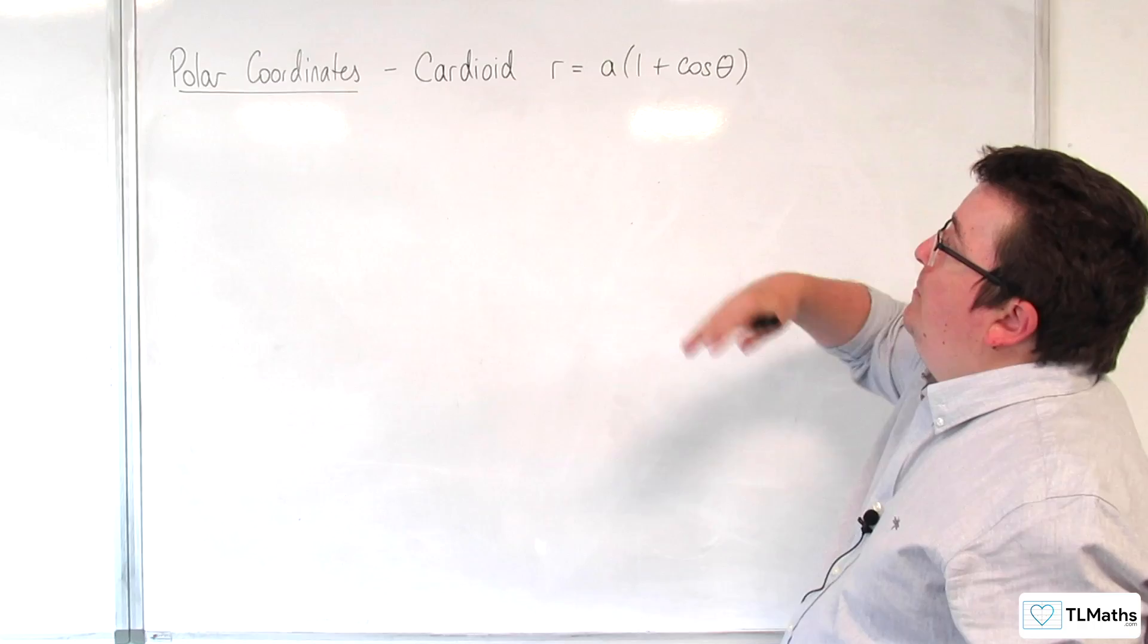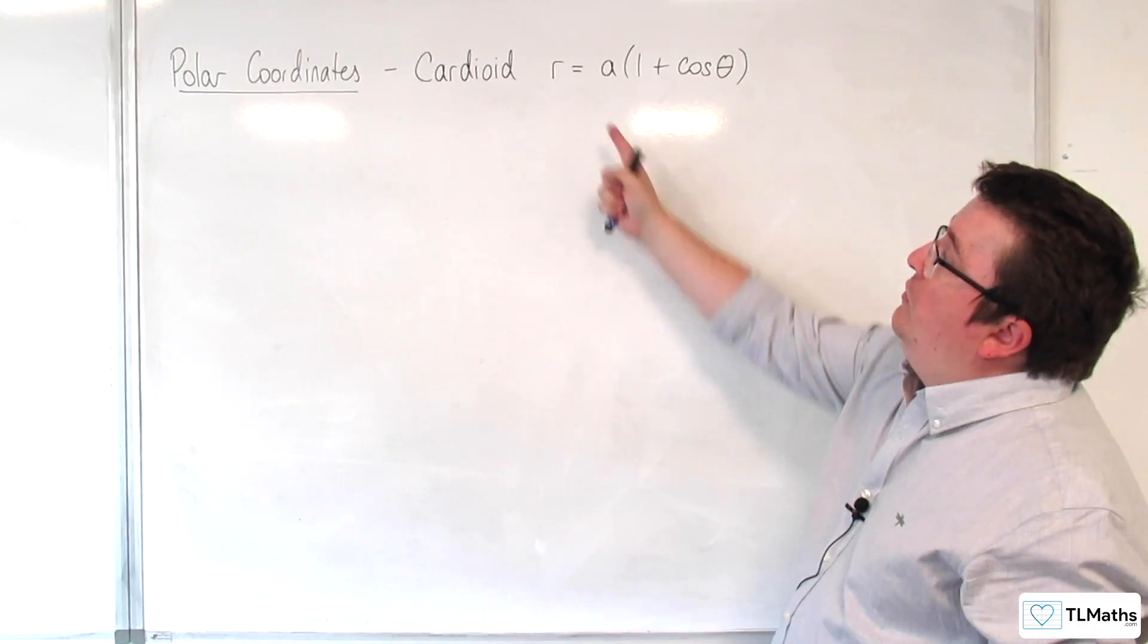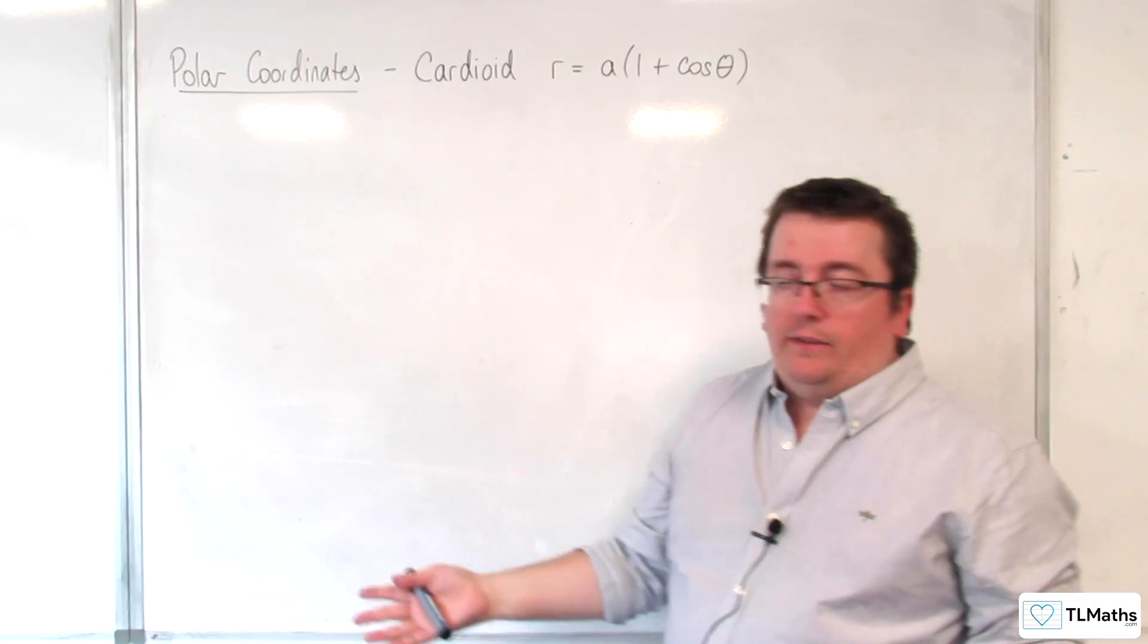Now, a general form can be written as R equals A times 1 plus cosine theta, or it's the same as R equals A plus A cosine theta.